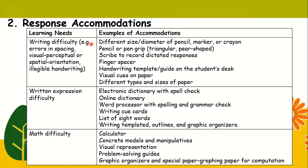In our table, we have the learning needs. In writing difficulty, for example, errors in spacing, visual, perceptual, or spatial orientation, and illegible handwriting. Examples of accommodations that we might use include different size or diameter of pencil, marker, or crayon, pencil or pen grip in triangular or pear shape, scribe direct or dictated responses, finger spacer, handwriting template, guide on the student's desk or visual cues on paper, and different types and sizes of paper.